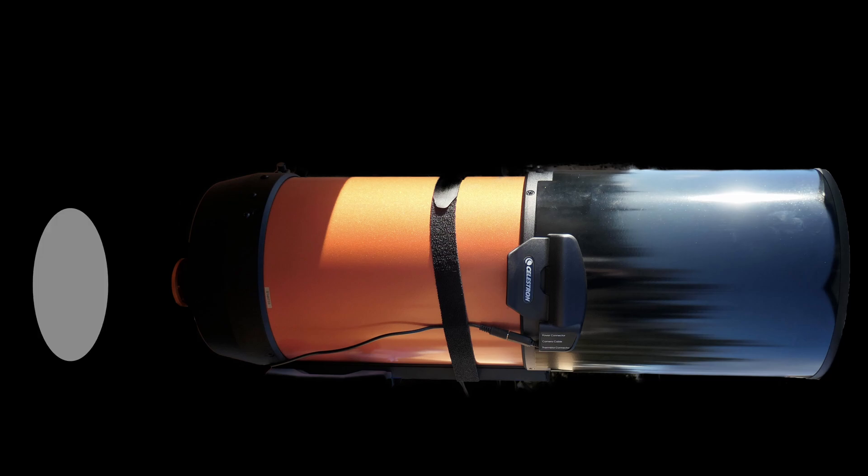The field of view that is created by any telescope is itself circular. And short of a circle, a square is going to fit into that best. Much better anyway, than a rectangle.